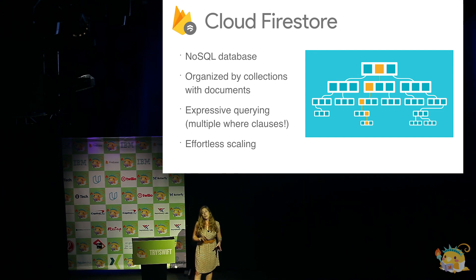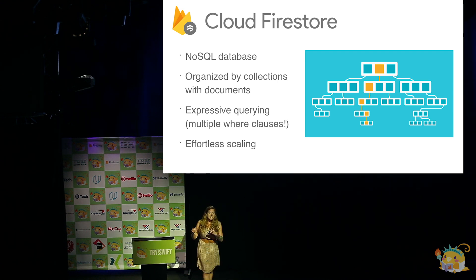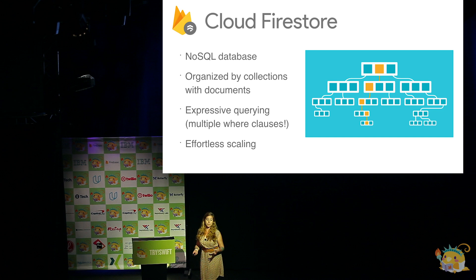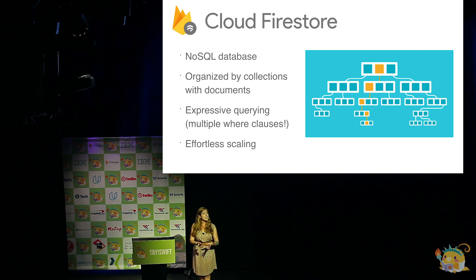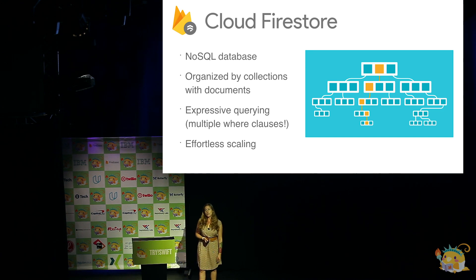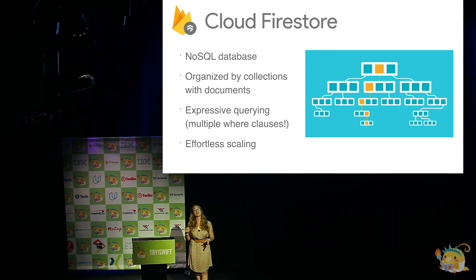If you've used the Realtime Database before — for those of you familiar with Firebase — you may know that it's essentially like a big JSON blob, and any time you query data, you're getting all the information under a specific path. Cloud Firestore is, in my opinion, much better because instead of being one big blob, it's organized into collections with documents inside of them. This enables you to make more shallow queries and query at a certain level rather than getting all the data underneath. Inside of a document you can have sub-collections, and you have better querying power. It also scales effortlessly — rather than scaling by the size of your entire database, it scales by the amount of results you get back.